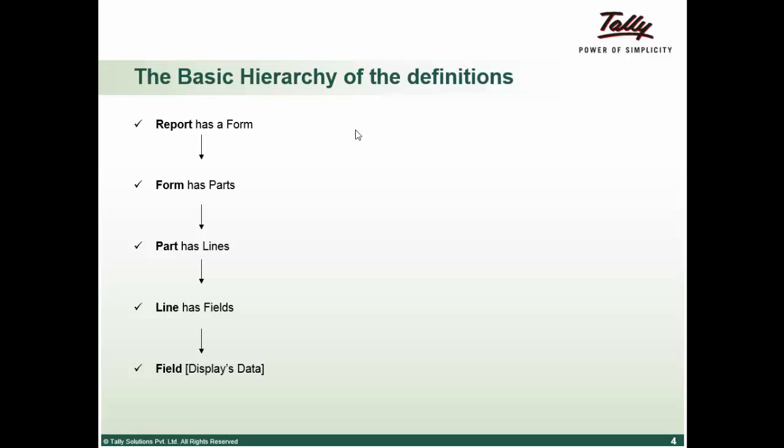Lines are always vertically sequenced. A line can further contain lines or fields, and at the end each line will have fields. Fields are horizontally placed in the line. A field can further contain fields, and at the end finally a field will display the data.